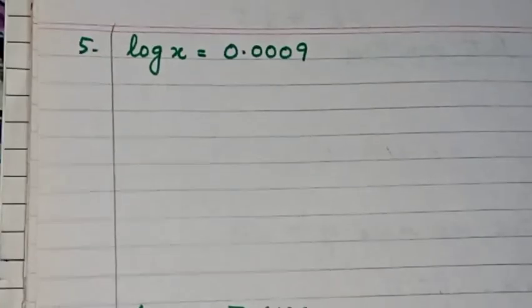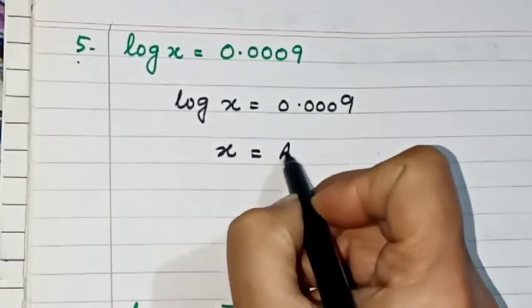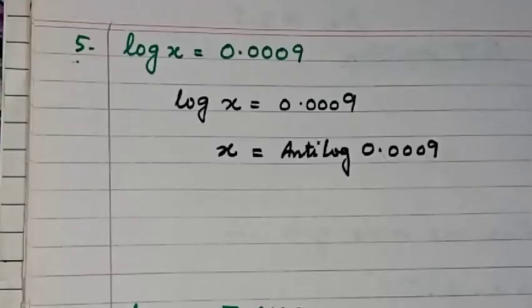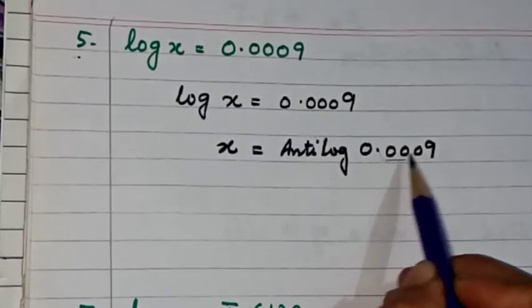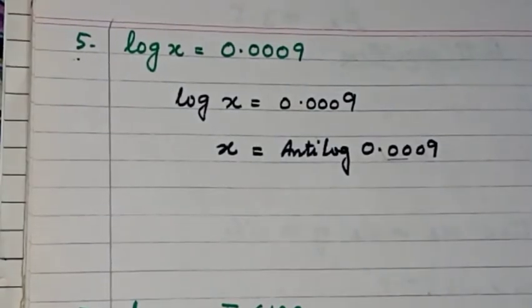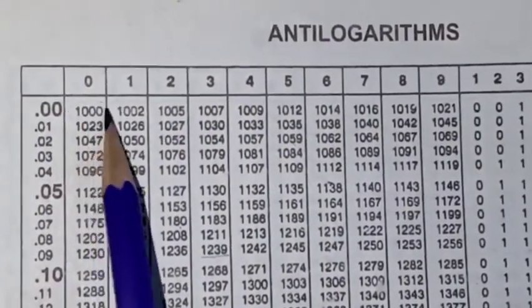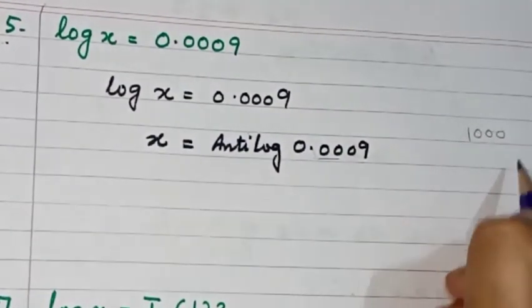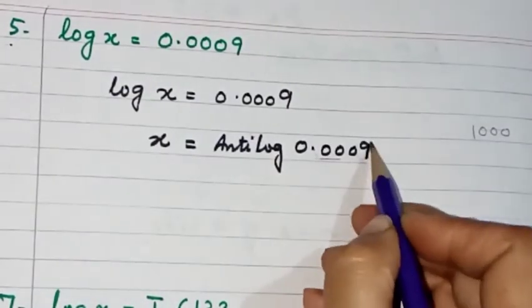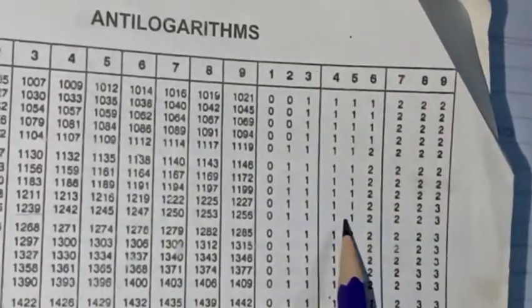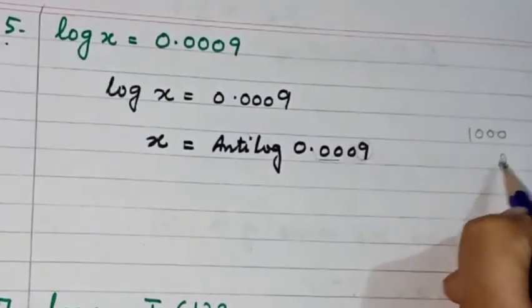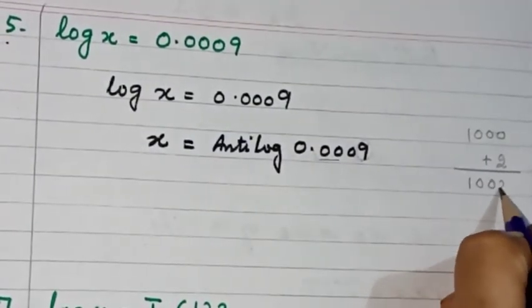Now we are doing question number 5. We write x equals anti-log of 0.009. We take the row 0.00 and go to column 0 in the anti-log table, which gives 1000. We write 1000 in the rough column. Then we go to the mean difference table and search for 9, which gives us 2. We add 2 to get 1002.